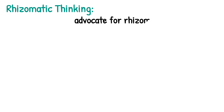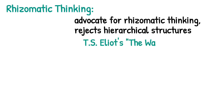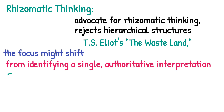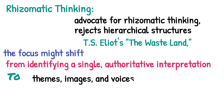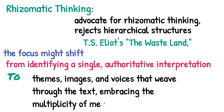Rhizomatic thinking. Post-structuralists advocate for rhizomatic thinking, which rejects hierarchical structures in favor of interconnected networks of meaning. Example: In a post-structuralist analysis of a poem like T.S. Eliot's The Waste Land, the focus might shift from identifying a single authoritative interpretation to tracing the interconnected themes, images, and voices that weave through the text, embracing the multiplicity of meanings.